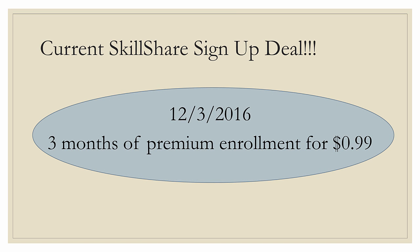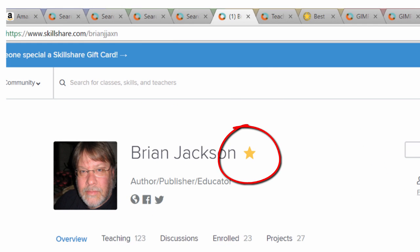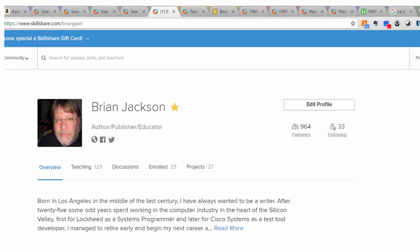But don't start with that — start with free. Along the way, they're going to want to tempt you into a deal: as of 12-3-2016, you can get three months of premium enrollment for just $0.99. Skillshare always has deals like this, and when it comes to getting into premium, you'll want to try it first with this three-month deal. The last thing I want to point out relative to premium is the little star next to the name. Some people have gold stars — it means you're a premium member, and I've been a proud premium member of Skillshare since I've been training on it.